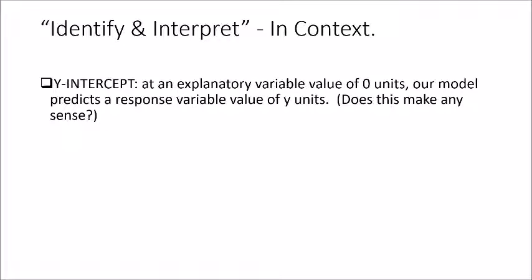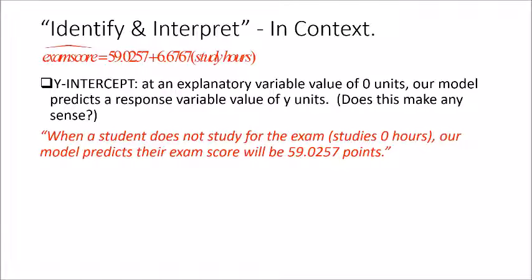Next we have y intercept. So here are the words from our sheet of words to memorize. So in context, we would say when a student does not study for the exam, or they study zero hours in this case, our model predicts their exam score will be about 59.0257 points or about 59 points if we're rounding to the nearest whole number.